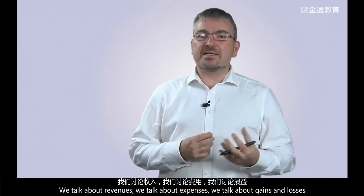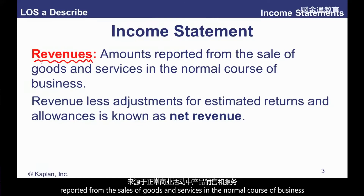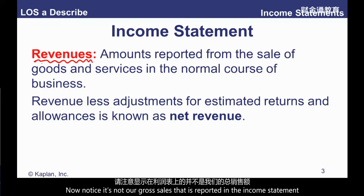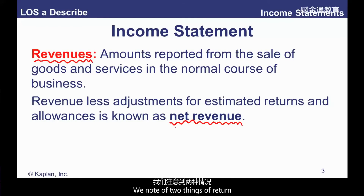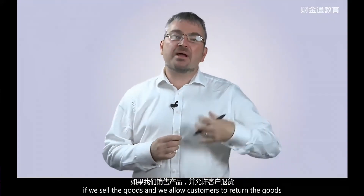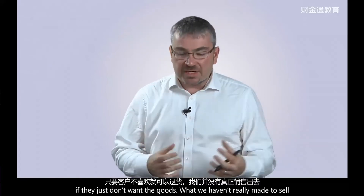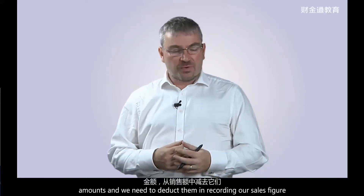We talked about revenues, expenses, gains and losses. Revenues are amounts reported from the sale of goods and services in the normal course of business — our day-to-day trading activity. Notice it's not the gross sales reported in the income statement; it's actually net revenue. Net of two things: net of returns — if we sell goods and allow customers to return them, we need to estimate and deduct those amounts — and net of allowances, which are typically discounts. For example, if market price is $10 but we sell at $8, we record the sale at $8.